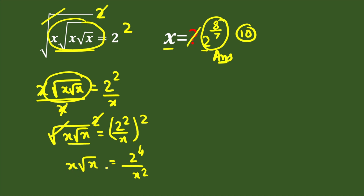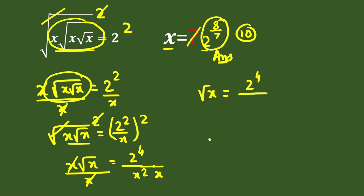We divide both sides by x to remove the x on the left. After cancellation, we are left with square root x on the left-hand side, equal to 2 to the power of 4 divided by x squared times x, which gives x cubed in the denominator. Again, we square both sides to remove this square root.